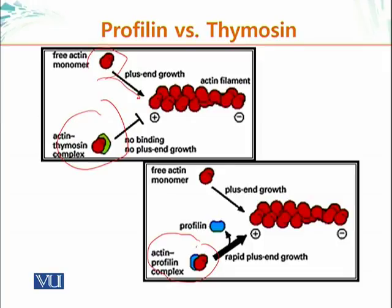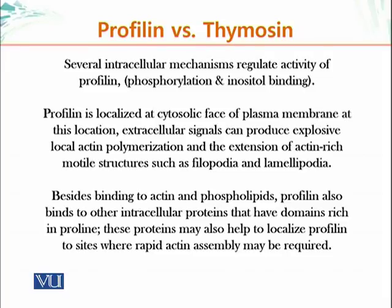You need to activate profilin at the site where you require actin polymerization; otherwise actin filaments will not grow on their own, because the organization of the cytoskeleton is crucial for the cell. Several intracellular mechanisms regulate the activity of profilin — for example, phosphorylation and inositol binding. Profilin is localized at the cytosolic face of the plasma membrane.